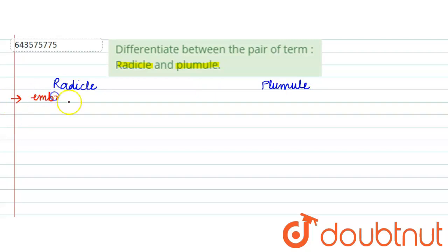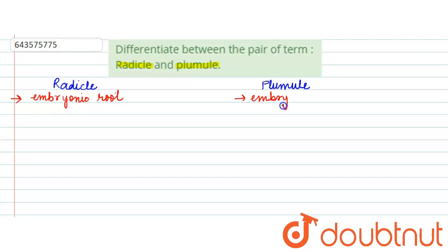The first difference is that your radicle is the embryonic root of the plant, whereas your plumule is the embryonic shoot of the plant. So this is the first and very basic difference.